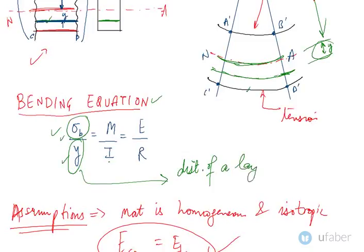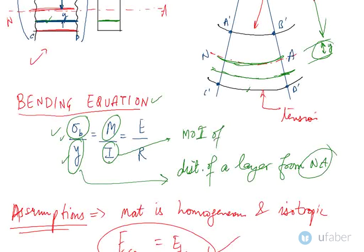M is the bending moment being applied. I is the moment of inertia of the cross section of the beam - it can be rectangular, triangular, or whatever cross section you have. E is the Young's modulus and R is the radius of curvature we just talked about.